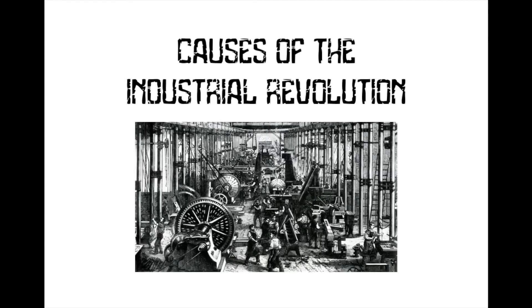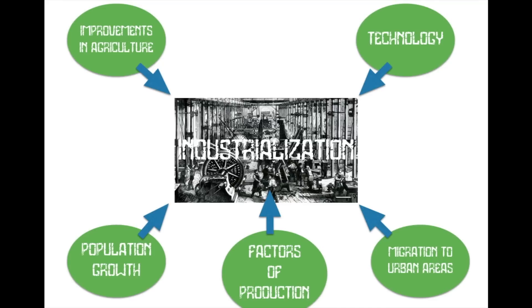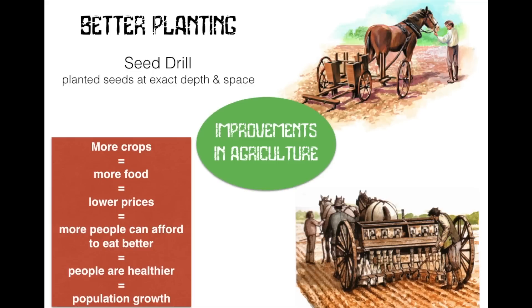Let's review the causes of the Industrial Revolution and figure out how we went from a world of farmers to a world of urban workers. We're going to be looking at a few things in this presentation: technology, improvements in agriculture, population growth, factors of production, and the migration of people to urban areas.